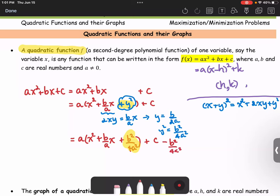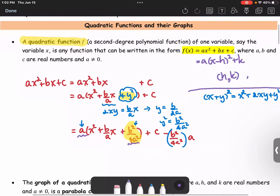Keep in mind, the whole parenthesis is multiplied by a. So that means we're going to have to subtract it out by this quantity multiplied by a. Let's use a different color. And simplify it.